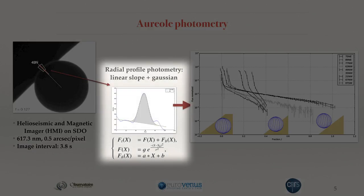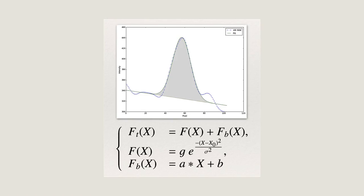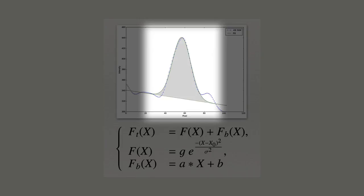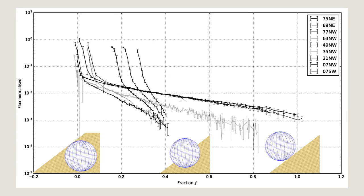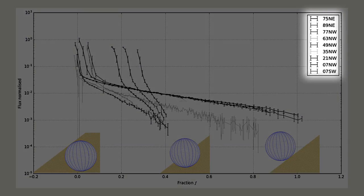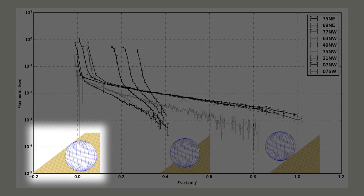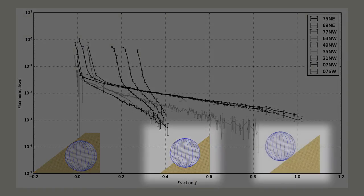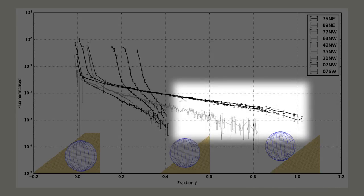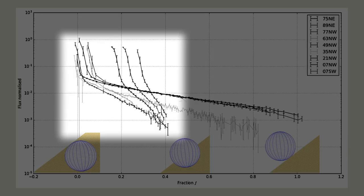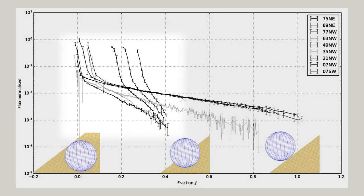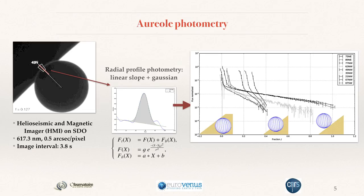We were able to perform photometry of the aural along the limb by fitting a Gaussian to the radial profile of the limb and subtracting a sloped background. We derived light curves — one light curve per degree of latitude. You can see the brightness of the aural at different latitudes as a function of the position of Venus with respect to the solar limb. The polar regions last longer while intermediate and equatorial latitudes fall faster. Something specific happens in the polar region that makes the aural brighter there.